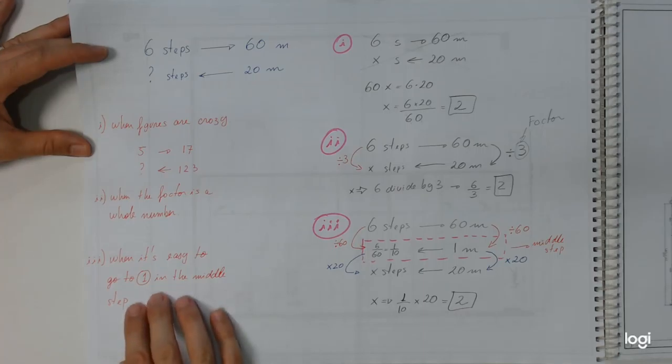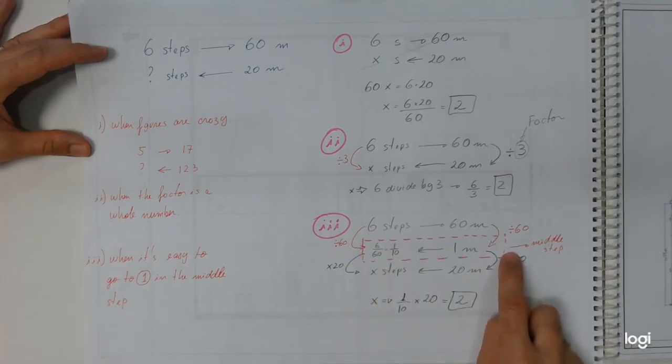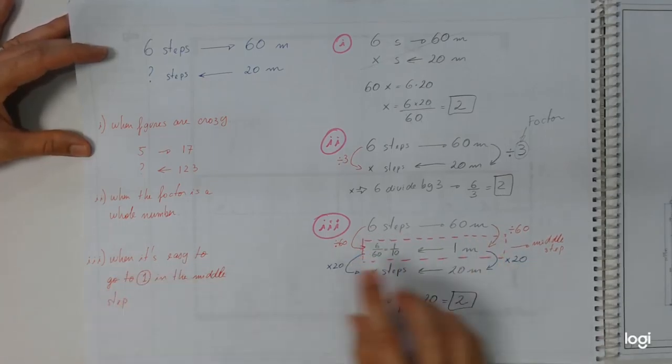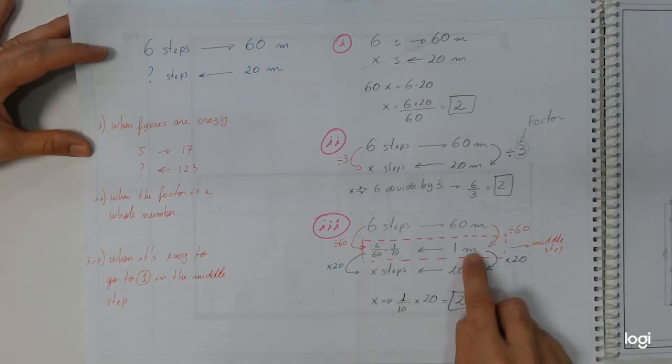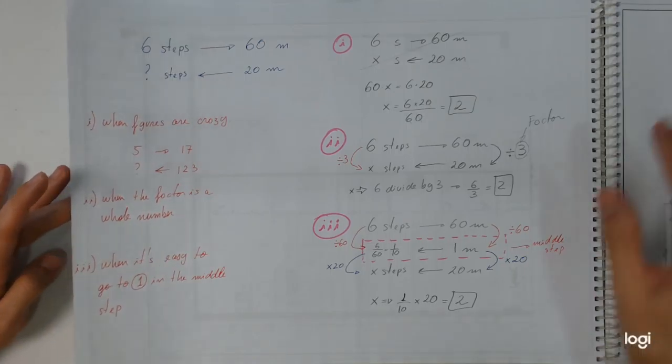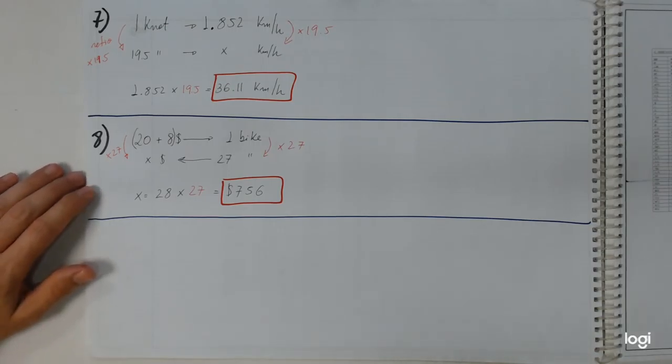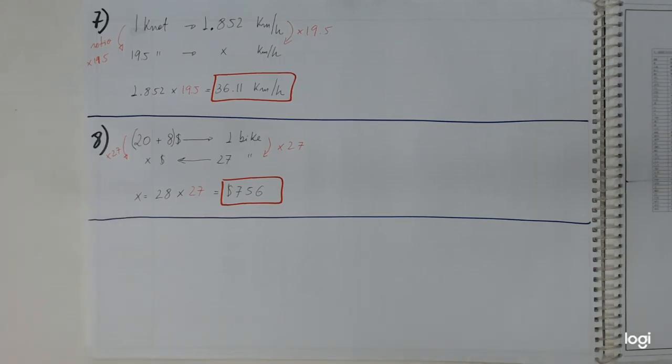You're going to use when it's very easy to get a one in here or a one in here. Remember, the pink is the middle step. We're going to use this third one when you have to make a one in here or one in here, depending on the problem. It is good to think about this. So that is about problem number eight, which is about the bicycle problem.